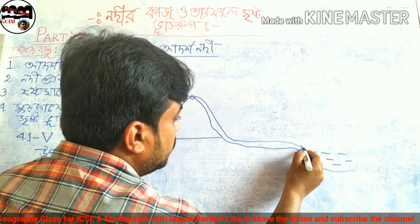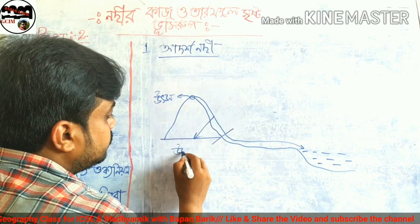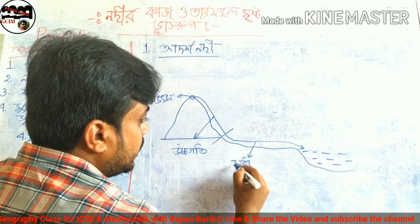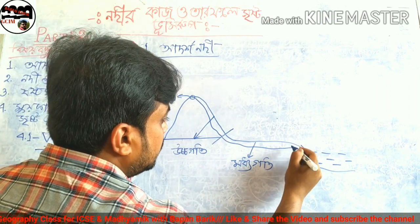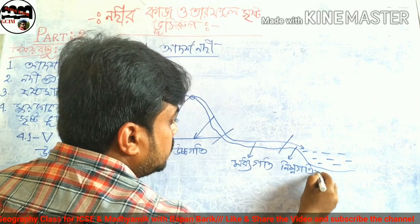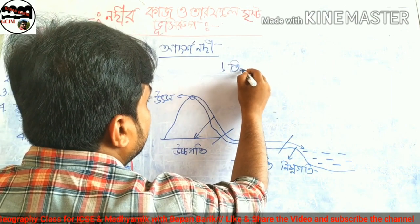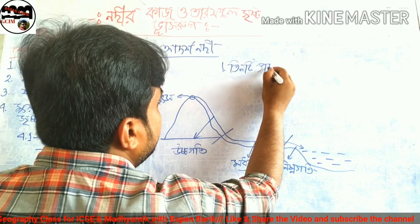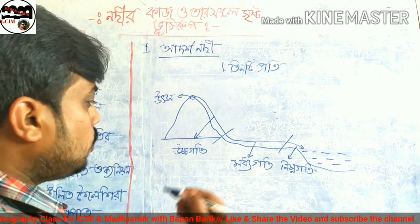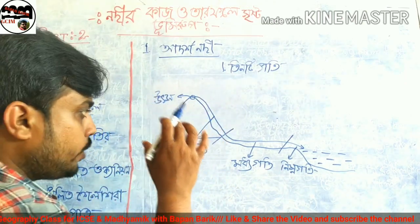First, let's look at the concept of an ideal river. When we consider a river flowing from a highland area, the upper region has high speed and erosional capacity. The middle section has moderate speed, and the lower section has lower speed — this is the basic gradient principle of river flow.